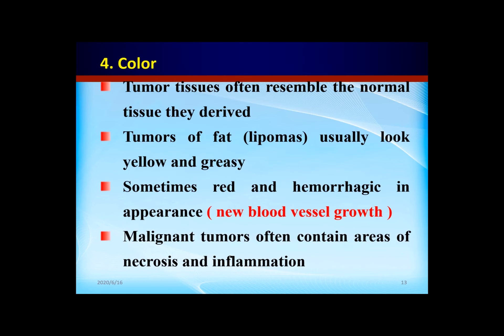Color. Tumor tissue often differs in color from the normal tissue they are derived from. For example, a lipoma derived from fat tissue has a yellow and greasy color. Another example: hemangioma, derived from blood vessel tissue, so the color is dark red.